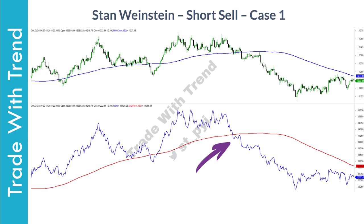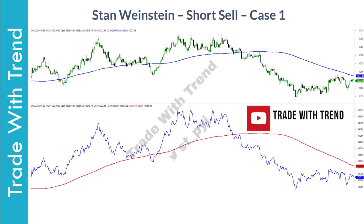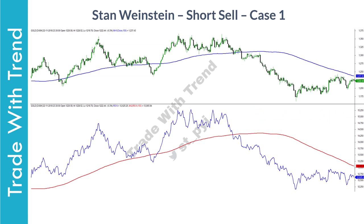Now if you think this is easy to analyze only in hindsight, look at what has happened to gold in current times. It has clearly given a breakout in 2019 based on Stan Weinstein's method. Following the breakout, price moved from 1,230 to about 1,500 over the next few months.